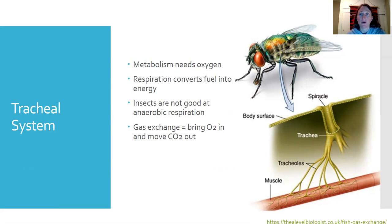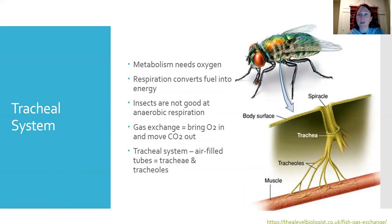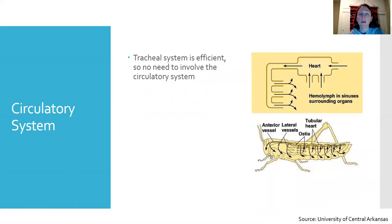Gas exchange is bringing oxygen into the body and moving carbon dioxide out of the body. To do that, insects use a tracheal system — a system of air-filled tubes connected sometimes to the outside through a hole called a spiracle. The trachea are the larger tubes connected to tracheoles, which are smaller tubes. Those tracheoles come very close to muscle tissue and organs and allow for diffusion across their membranes. The tracheal system is very efficient, so insects don't need to involve the circulatory system in oxygen transfer for the most part, although a few do.